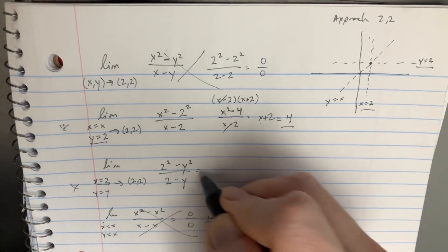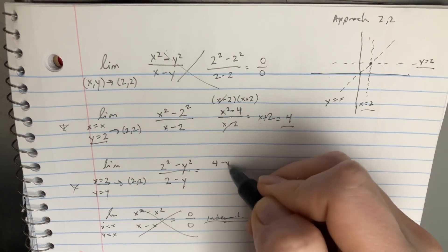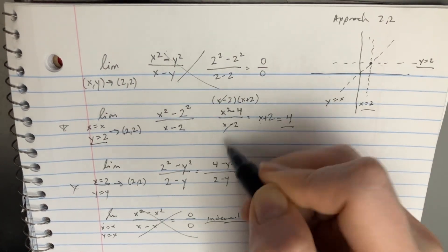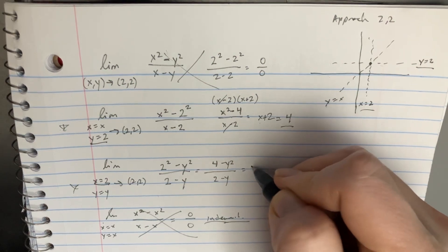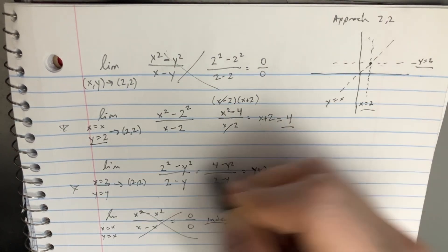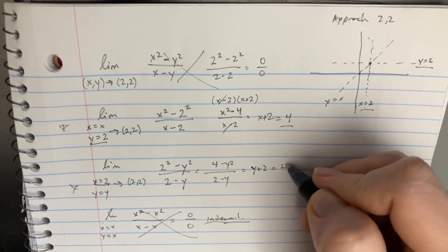And over here, if we plug this in, then we get 4 - y² divided by 2 - y. Same thing is going to happen. We're going to get y + 2 essentially, and then once that reaches 2, it's going to be equal to 4.